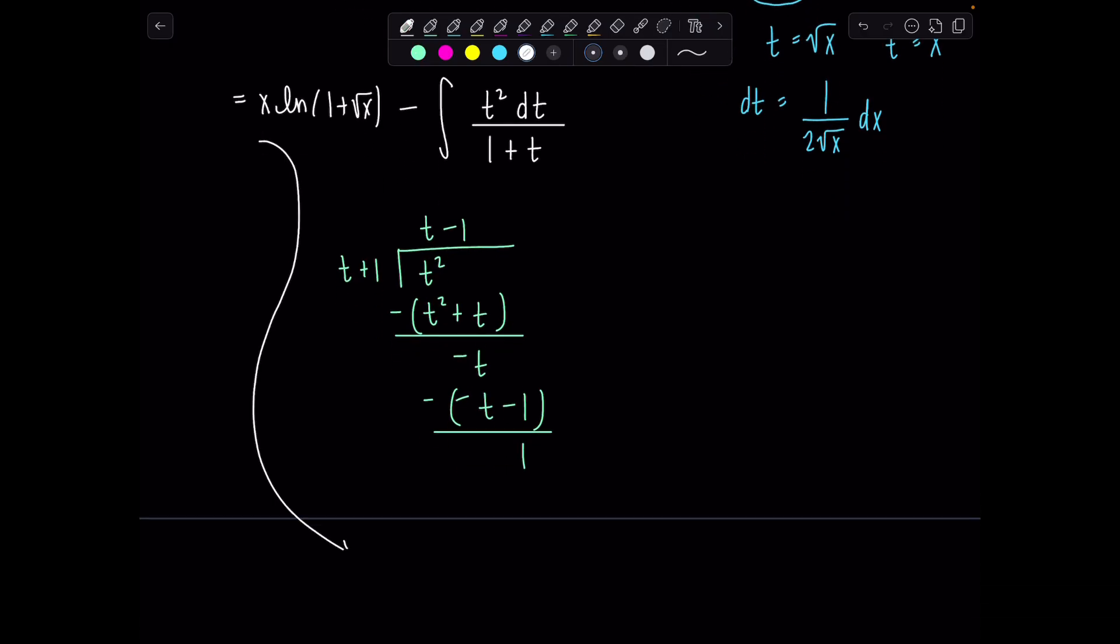Okay, so what does that mean for us? So we still have x ln(1 plus rad x) out front minus, now my integrand becomes t minus 1, that's the quotient, plus, here's my remainder, 1 over the divisor, 1 over t plus 1 dt. How we doing? Good?